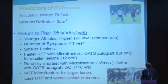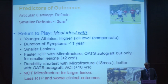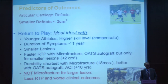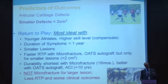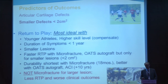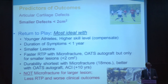In summary, predictors of outcome: smaller defects less than 2 cm² are most ideal with younger athletes who have a higher skill level and can compensate, a duration of symptoms less than a year, and faster return to play with microfracture and OATS autograft — but only for smaller lesions. Durability is shortest with microfracture, better with OATS autograft with results up to 10 years. Don't do microfracture just because it's easy on larger lesions — those outcomes are worse, and it burns bridges for other options. If you have to come back and do ACI on top of a failed microfracture, the results have a 33% higher failure rate. Microfracture on large lesions has dismal results even upfront — you'd be doing your athlete a disservice. Microfracture is reserved for the smaller lesion, period.